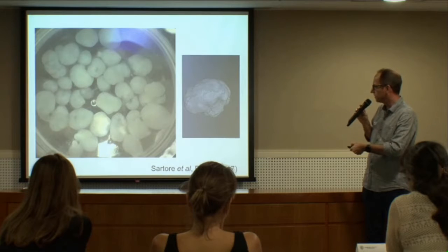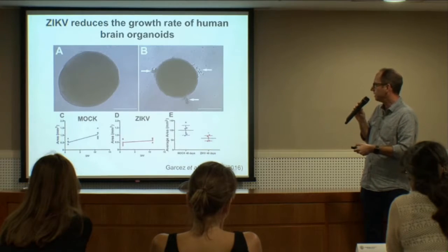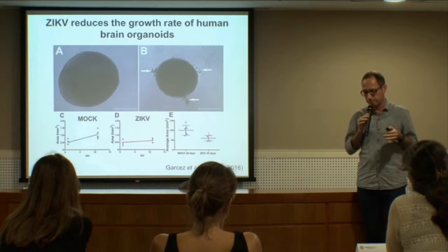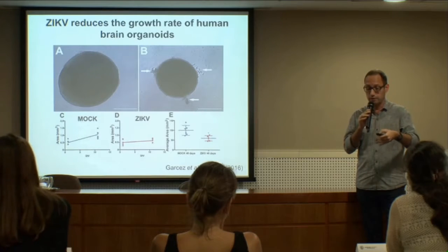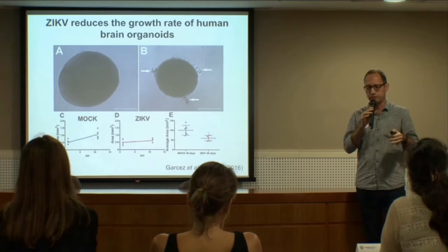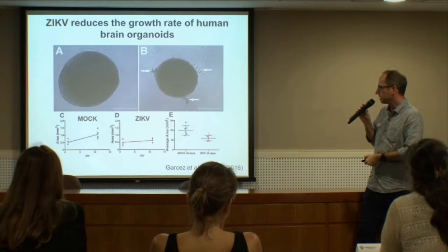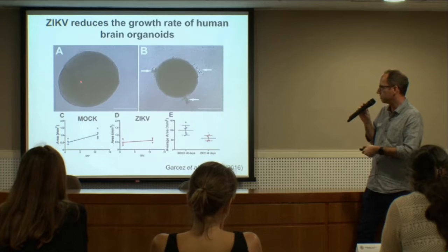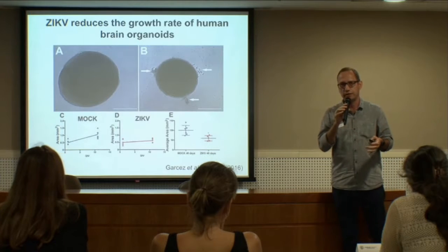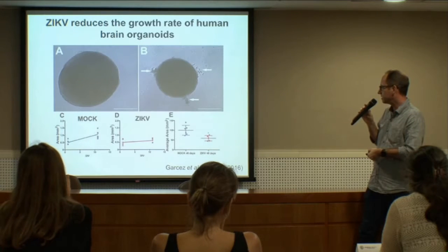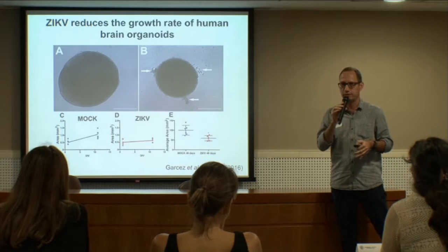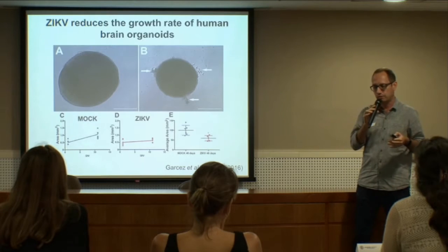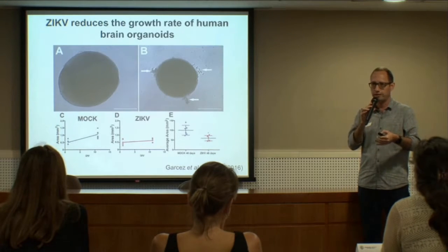We decided to look at brain organoids because in that model we have interkinetic nuclear migration, information on the cortical plate, and several other aspects of brain development that we can replicate. Here is another tomography image of one of these brain organoids. We infected brain organoids with the Zika virus and followed their growth for over 11 days. There is a reduction in growth of 30 to 40% after 11 days, very similar to what we see in the brains of fetuses depending on the stage when the infection happened.